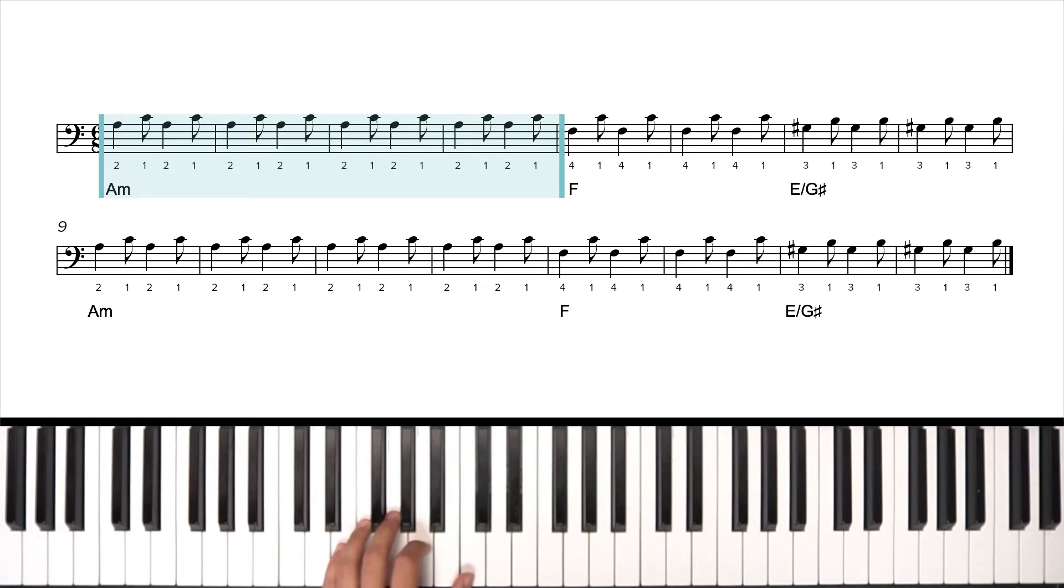Okay. If we're counting eighth notes, there are six per measure. So we're going to go one, two, three, four, five, six. And then that repeats, and so on.